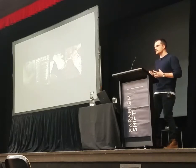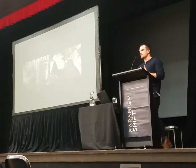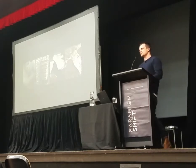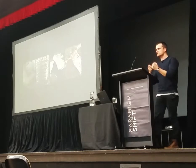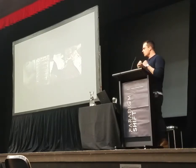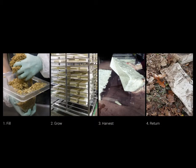Over the course of a week, the mycelium gets activated and starts to eat the corn stalk. As it eats, it grows into the corn stalks, eventually forming a solid material with structural properties similar to styrofoam. After this material grows, we harvest it and can use it to build our structure.